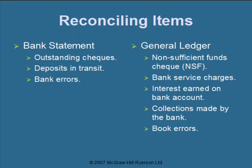Differences found through the bank reconciliation process include: on the bank statement side — outstanding checks that haven't cleared the bank yet, deposits in transit that were deposited too late to appear on the statement, and bank errors. Items that could change the general ledger cash account include NSF checks, bank service charges, interest earned, interest expense for loans, collections made by the bank from customers, or bookkeeper errors.